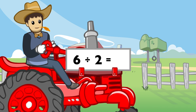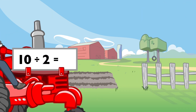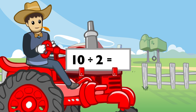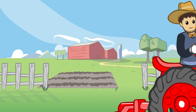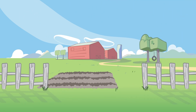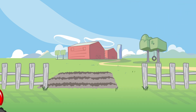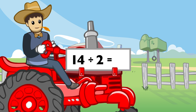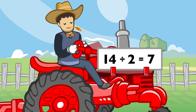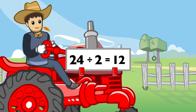6 divided by 2 equals 3. 10 divided by 2 equals 5. 20 divided by 2 equals 10. 4 divided by 2 equals 2. 14 divided by 2 equals 7. 24 divided by 2 equals 12.